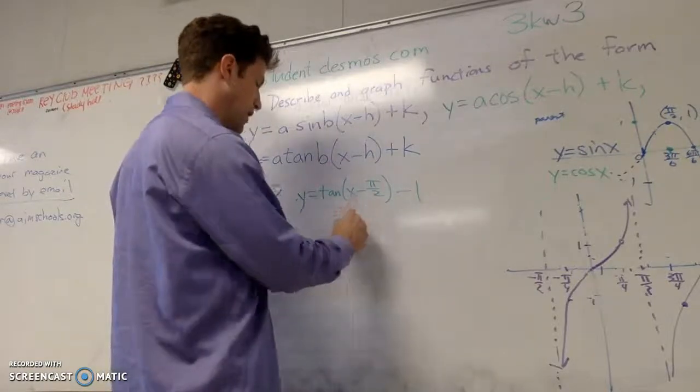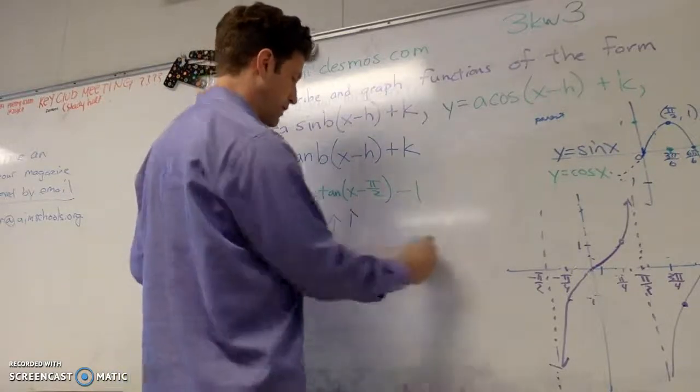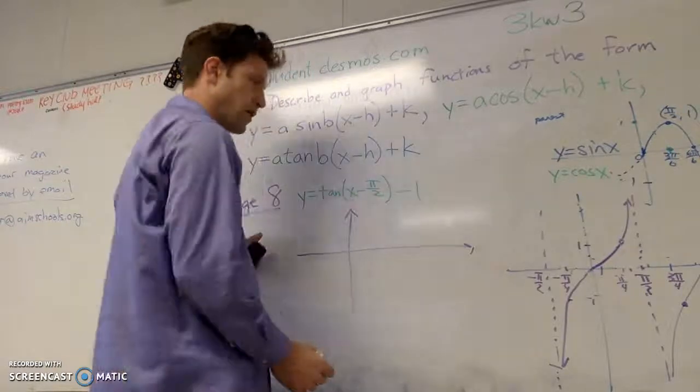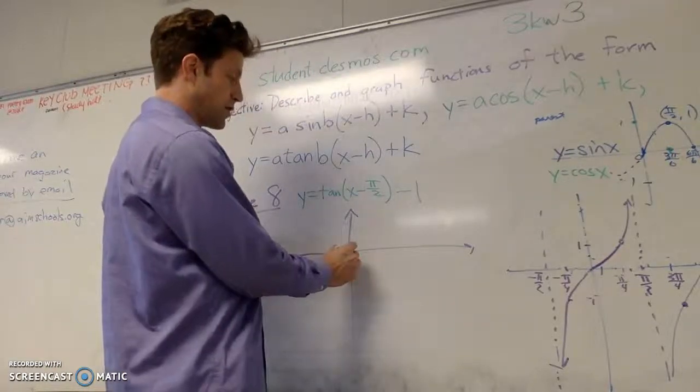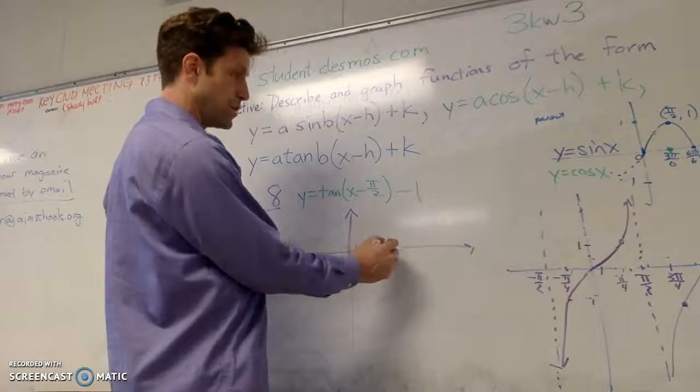I'll move that to the right by pi over 2, and I'm moving it down 1. So now, moving it down 1, I'm going to make the axis a little higher than I would otherwise. So my 0 is going to be at pi over 2, which used to be my asymptote.